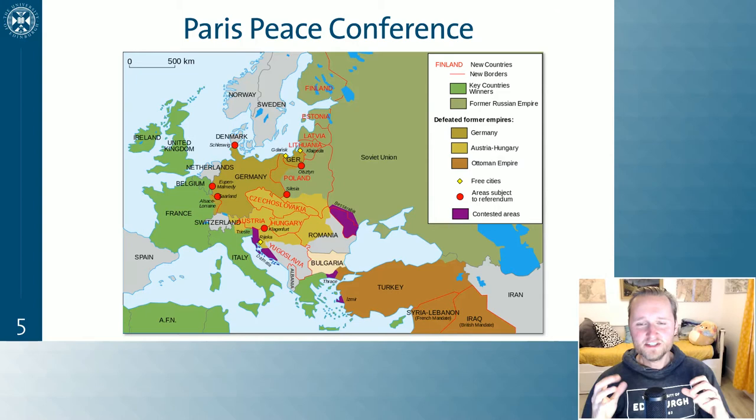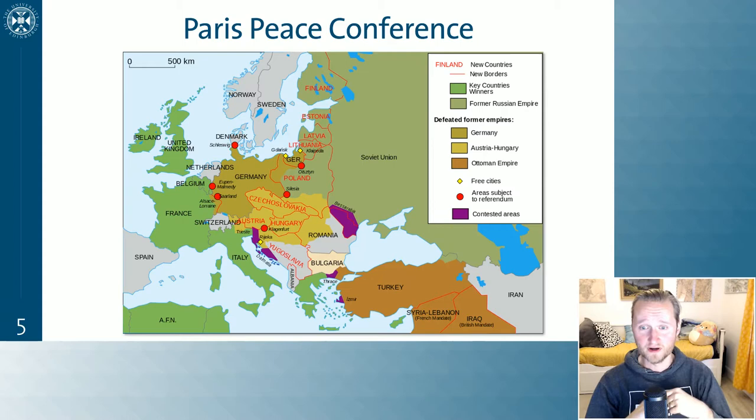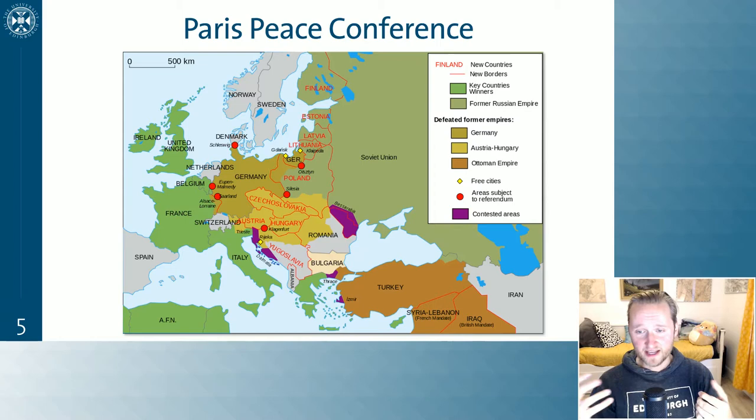Just to give you a taster of how much they really had to do: all the things in red here were things created basically wholly new after the Paris Peace Conference. There were countries that had not existed before the war, carved out by this Paris Peace Conference. The Austro-Hungarian Empire suddenly became Austria, Hungary, Czechoslovakia, Yugoslavia, and Romania — all as independent countries that had not been around before.